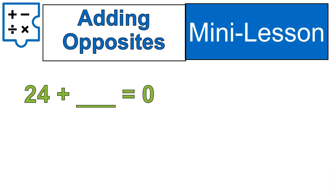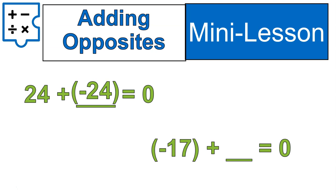I want you to try this one out: 24 plus what gives us zero? Did you say negative 24? Yes — 24 plus negative 24 gives us zero. How about negative 17 plus something? Negative 17 plus positive 17. Negative 17 plus 17 equals zero. Are you noticing something about adding opposites? There are several patterns that you might start to see.